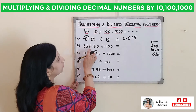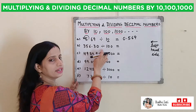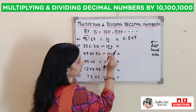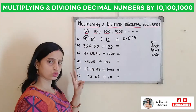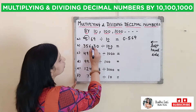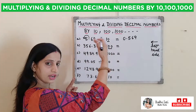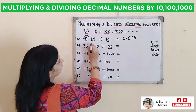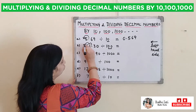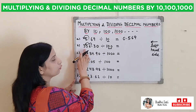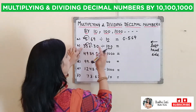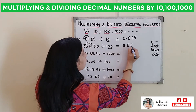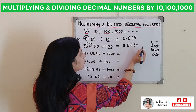The second is 356.30 divided by 100. Again, our first step is to check the number of zeros. In 100 there are 2 zeros. That means our decimal will shift to the left hand side by 2 places — 1 and 2. Now our decimal will come between 3 and 5, and our answer will be 3.5630.